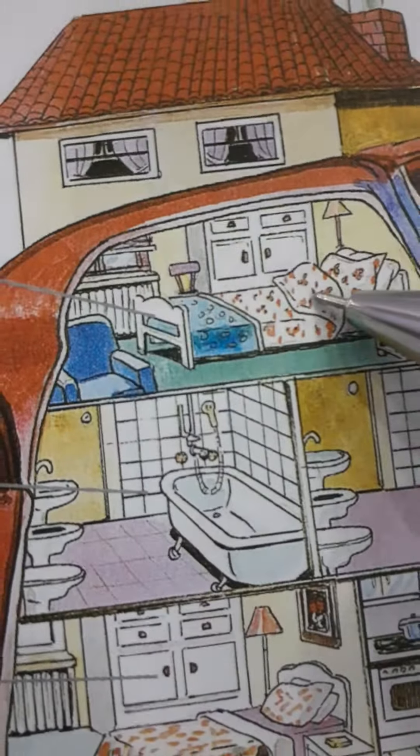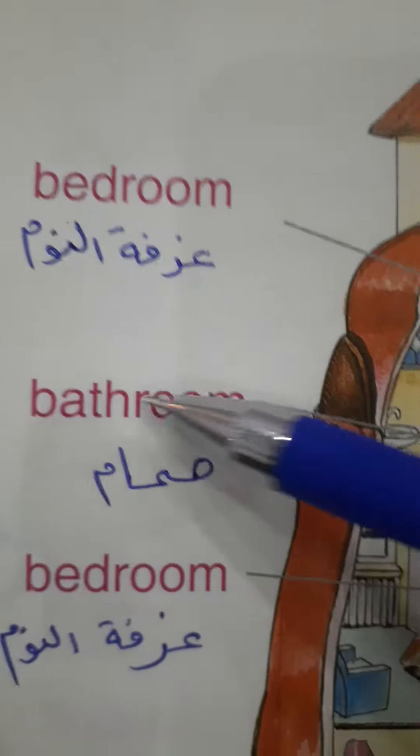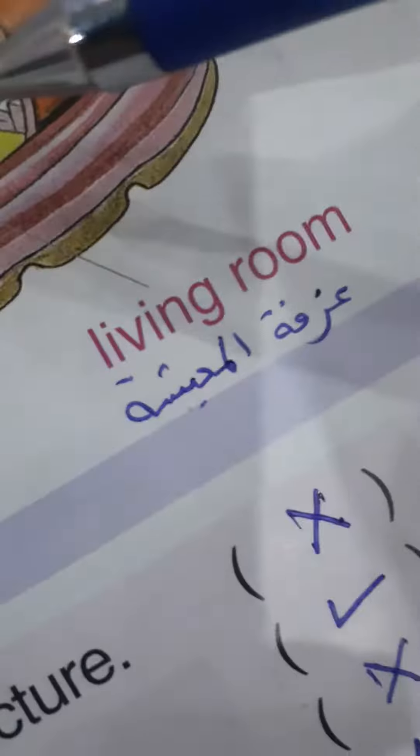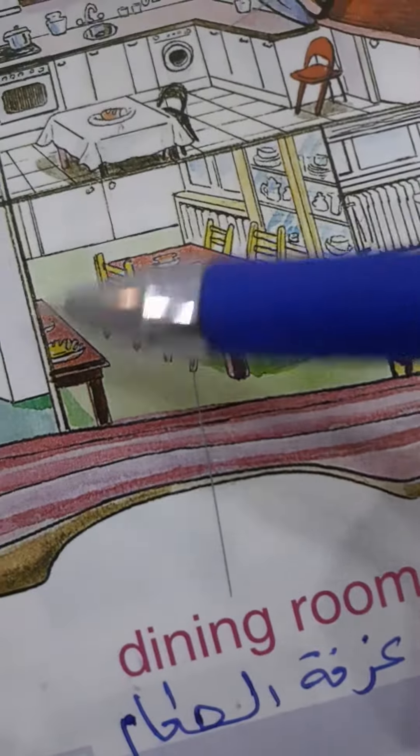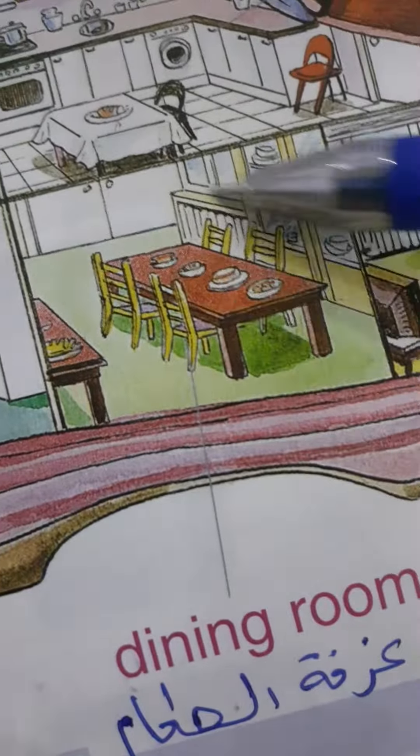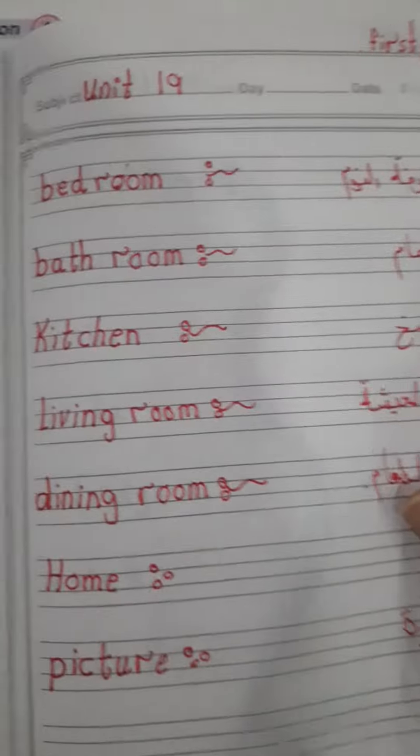Bathroom. Kitchen. Living room — غرفة المعيشة. Dining room — غرفة الطعام. Bedroom — غرفة النوم. Bathroom.